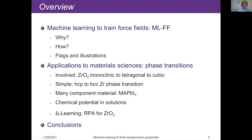I will start off with zirconia, which shows phase transitions from monoclinic to tetragonal and finally to cubic. I'll give you some idea what the machine learning force field does, where you have to be careful and what to worry about. Then possibly a short intro to the HCP to BCC zirconium phase transition, and finish with a many-component system. As an appetizer, I'll show you that you can even learn beyond DFT energies — namely RPA energies for zirconia.